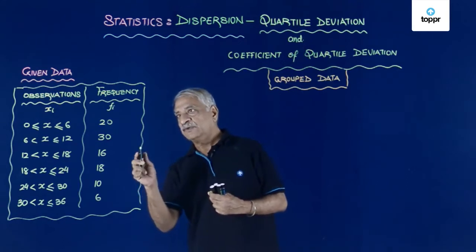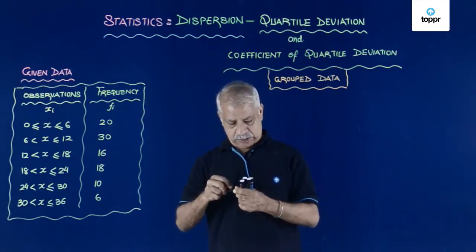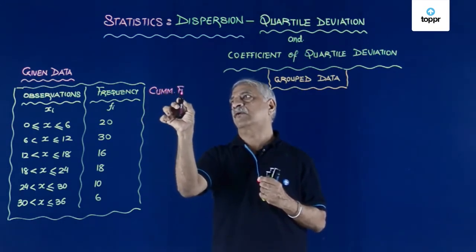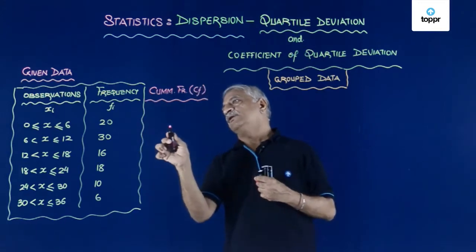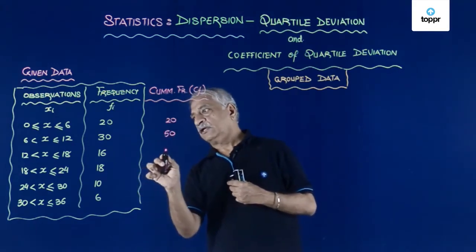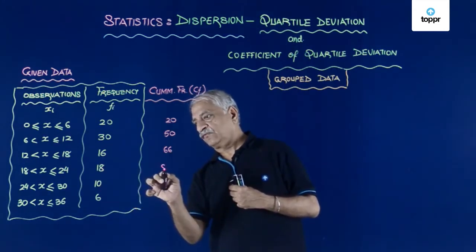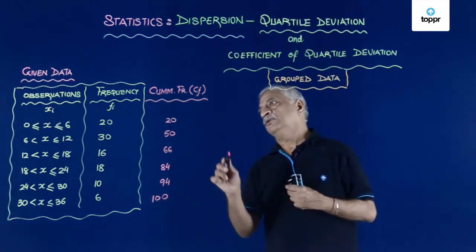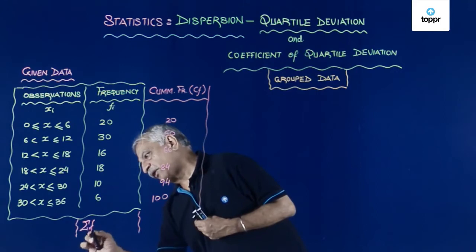Now, in this, our first task will be to find out the quartiles Q1 and Q3. So for that, let us first find out the cumulative frequency which is CF. So this gives me 20, this gives me 50, then I have 66, then 74 and 84, 94 then 100. This also gives me that sigma Fi, this is 100.